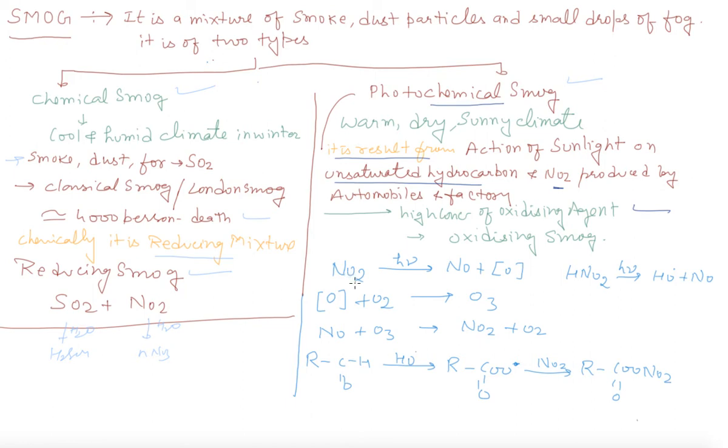The reactions are: NO2 will break down in sunlight, gives you NO and nascent oxygen. Nascent oxygen reacts with oxygen gives you O3. Then this O3 reacts with NO and O2 and gives you NO2 and O2.